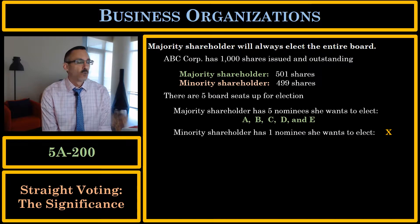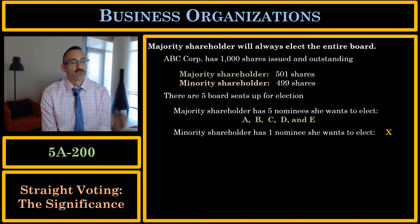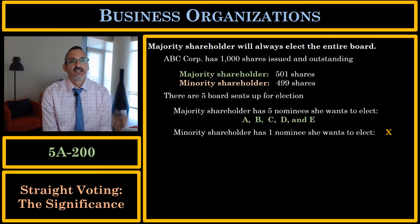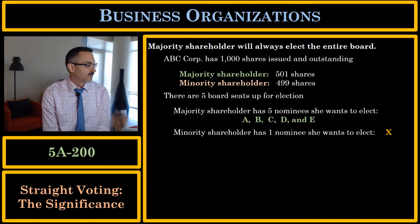This is why under straight voting the majority shareholder can elect the entire board of directors, no matter how large the board is. Under straight voting, the minority shareholder will not be able to elect even one director.